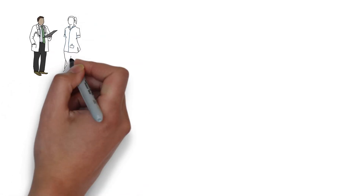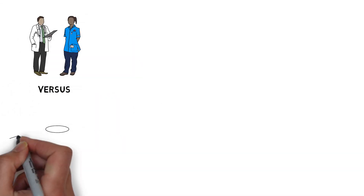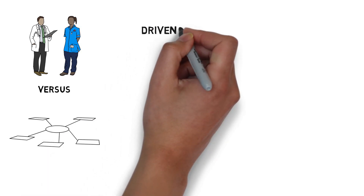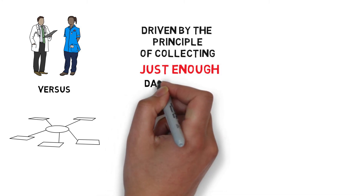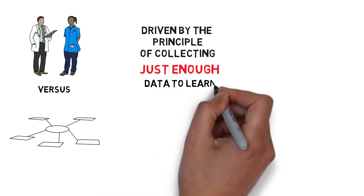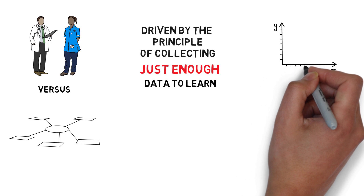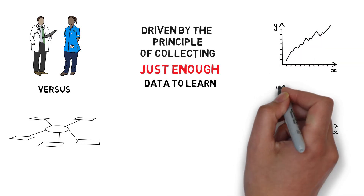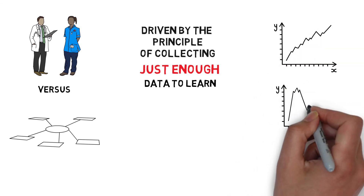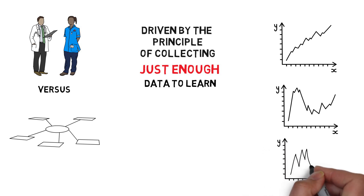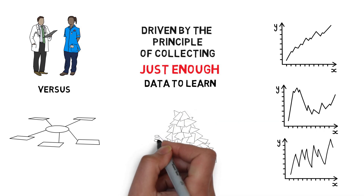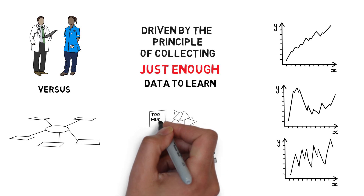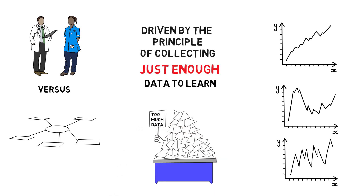Change on the front line versus changes to a whole system also requires a family of measures, but the actual number of measures must be driven by the principle of collecting just enough data to learn. It is recommended to always examine changes from multiple points of view, but in reality the number of measures required to make changes on the front line might be less than the three to eight recommended for a balanced family of measures. The burden of data collection must not outweigh the value of the measure in helping us learn about the process we are trying to improve.